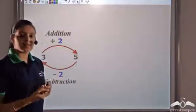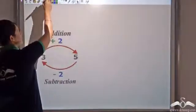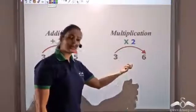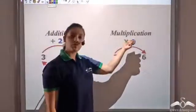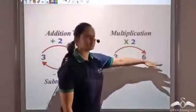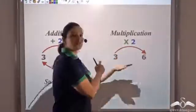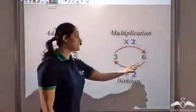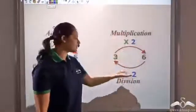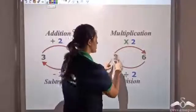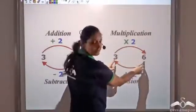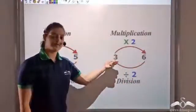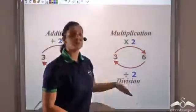Repeatedly adding the same number gives me multiplication. So if I add three two times, or I can say if I multiply three by two, I get six. Now mathematicians wanted a reverse operation for multiplication too, so they introduced division as a reverse operation of multiplication — division would undo multiplication. So multiplying three by two gives me six, and if I divide six by two, I get back to three again.